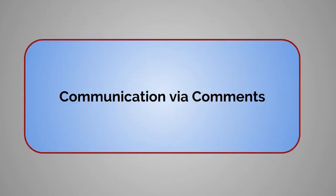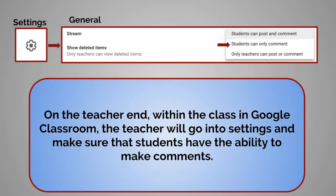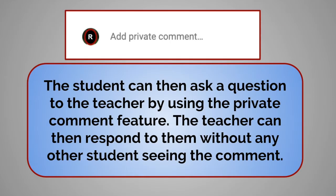In this section, you will learn how to communicate via comments. On the teacher end, the teacher will need to change how notifications go out in Google Classroom. When in the specific class, go to the upper right-hand corner and click on the Settings cog. Under General, click on Student Can Only Comment. In an assignment, a student can send a question to the teacher using the private comment feature. This allows the comment to be emailed to the teacher, and a conversation between the teacher and student can then occur.